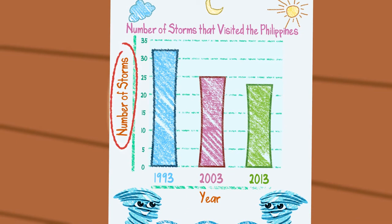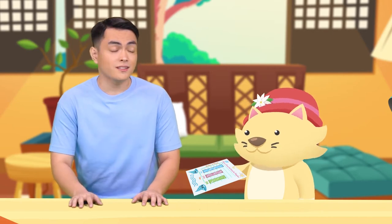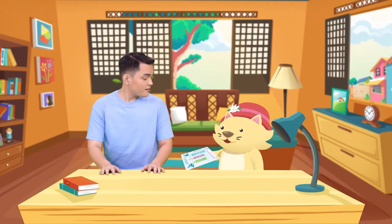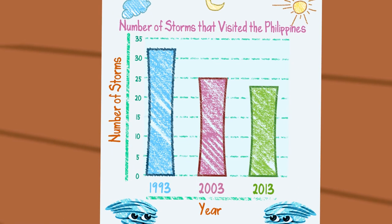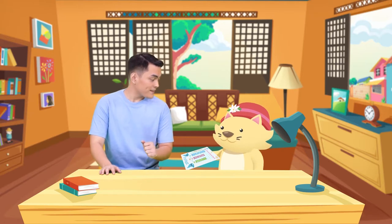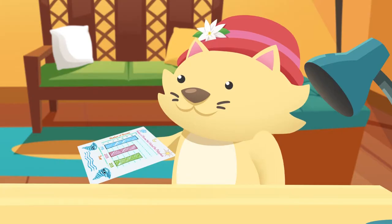Number of storms and year — those are the labels. I think I get it. There were more than 30 storms in 1993, 25 storms in 2003, and about 24 storms in 2013. Is that right? Yes, that's right. So that's how you read a bar graph. It's easy to compare just by looking at the bars.